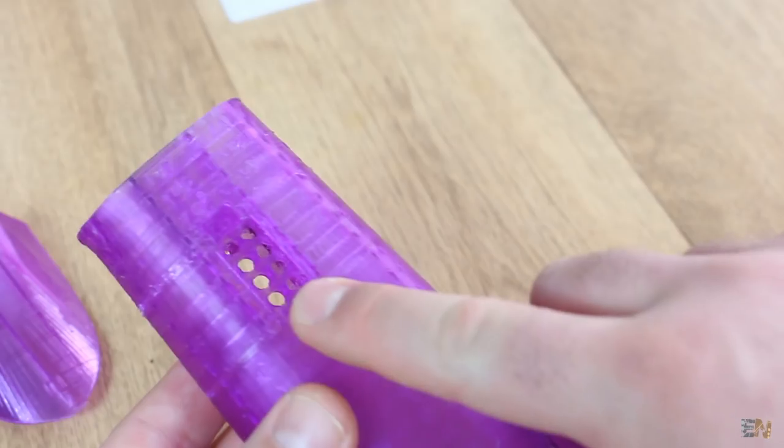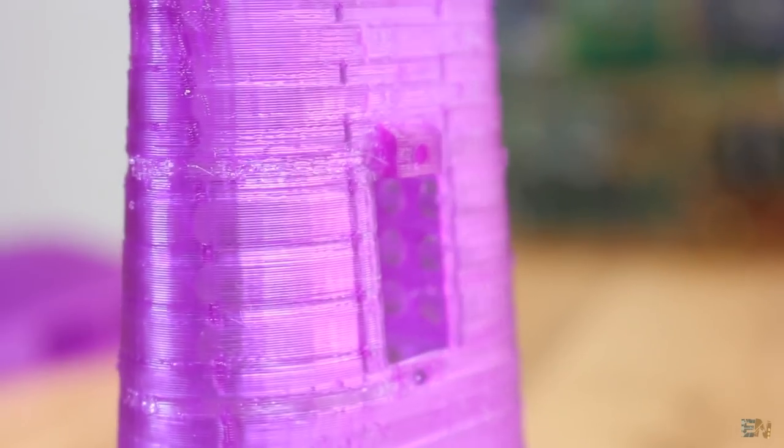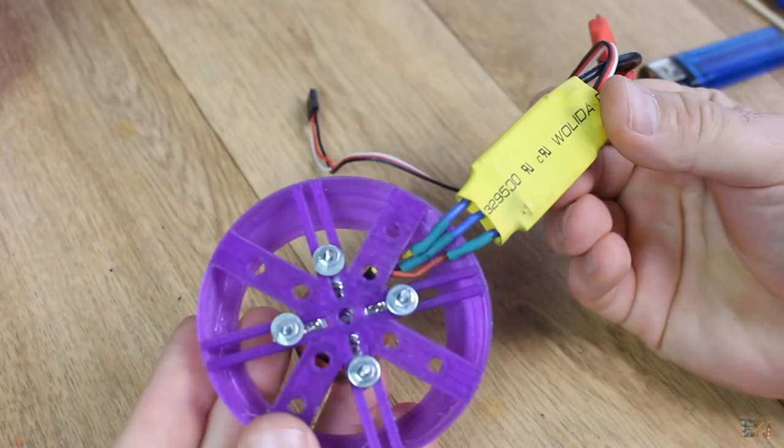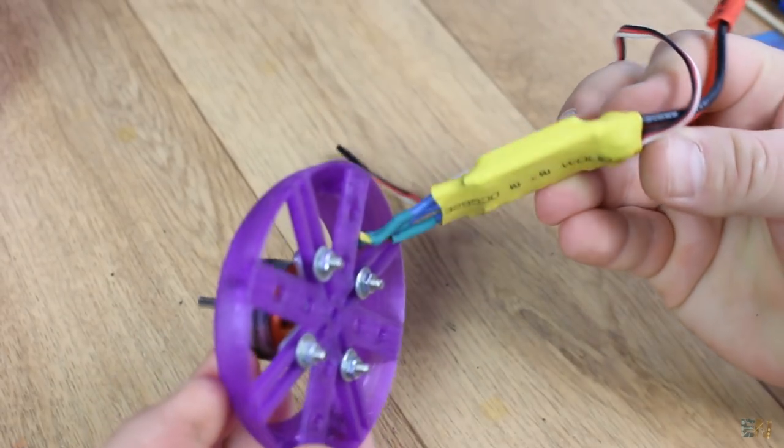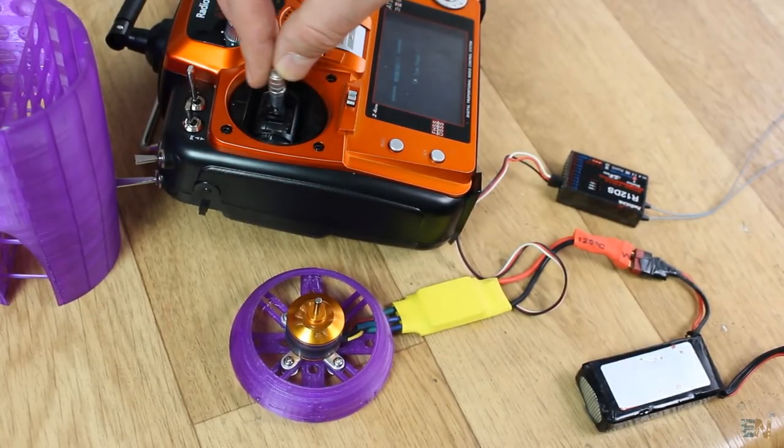Ok, the tail part also has that kind of holes for the servo motors, for the elevator and rudder. Next, the nose tip part has a shape for any kind of brushless motor. All we have to do is screw it in place here on these holes. Now let's build this plane.